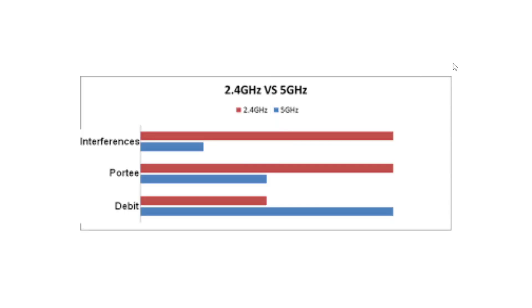Welcome to the Windows and Computer channel. Last week we had a video talking about how to get into your router. One of the questions that came through the weekend was: what is the difference between 2.4 and 5 gigahertz when a router has both, and what is the best option? Should I connect to the 2.4 or to the 5 gigahertz?